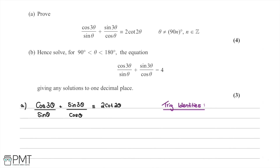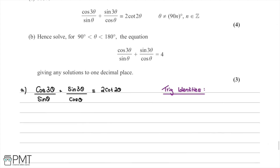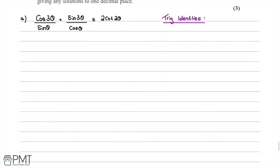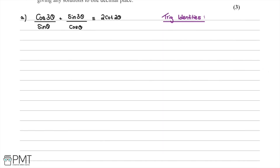In this question we're asked to prove that cos(3θ)/sinθ + sin(3θ)/cosθ is equivalent to 2cot(2θ). To begin, the first step is to multiply out our fractions and get everything into one single fraction with the denominator sinθ cosθ.